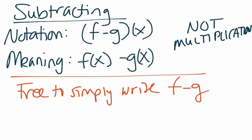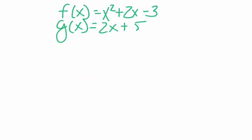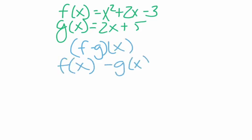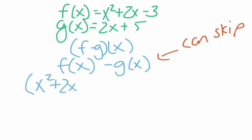Let's go back to our sample functions. Those were f of x equals x squared plus 2x minus 3, and g of x equals 2x plus 5. Applying them to this example: we would have f minus g of x, which you would interpret as f of x minus g of x. You don't have to write that out — that is your teacher emphasizing what the notation means for the purpose of teaching. It is not necessary for you to keep writing it out. So f of x is x squared plus 2x minus 3, and g of x is 2x plus 5.